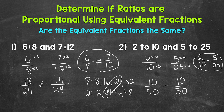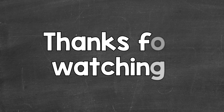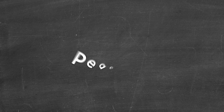So there you have it — that's how to determine if ratios are proportional using equivalent fractions. Rewrite the ratios in fractional form. Then find the least common multiple between the bottom terms of the ratios. That number will be the bottom term or denominator of the renamed equivalent ratios or equivalent fractions. If these equivalent ratios are the same, then the ratios are proportional. If they are different, they are not proportional. I hope that helped. Thanks so much for watching. Until next time, peace.